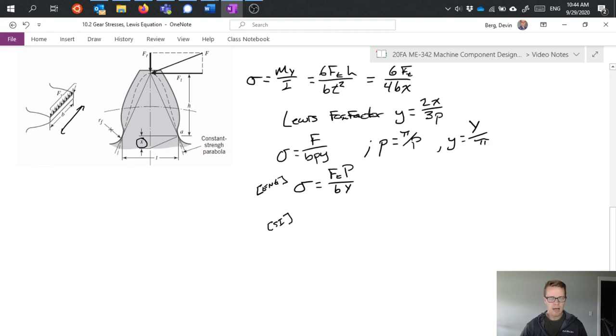In SI we'd write this equation as F_t over m b Y. That's a useful equation and this gives us the ability to calculate stress in the gear tooth and determine our failure.